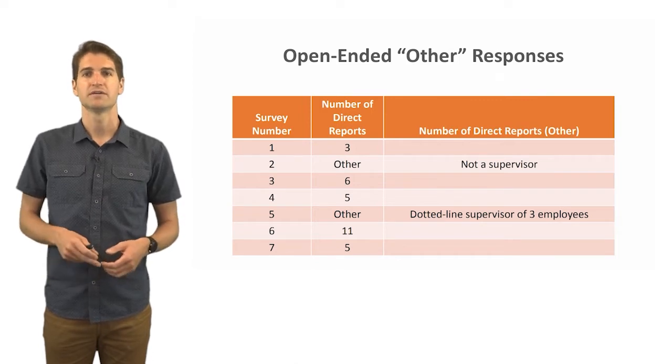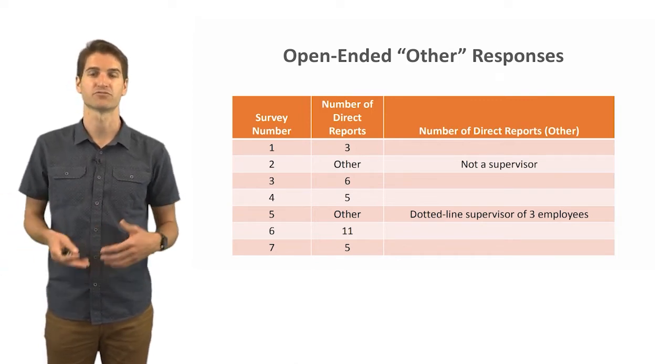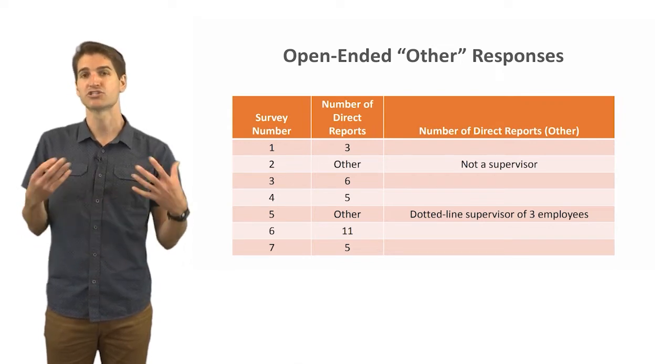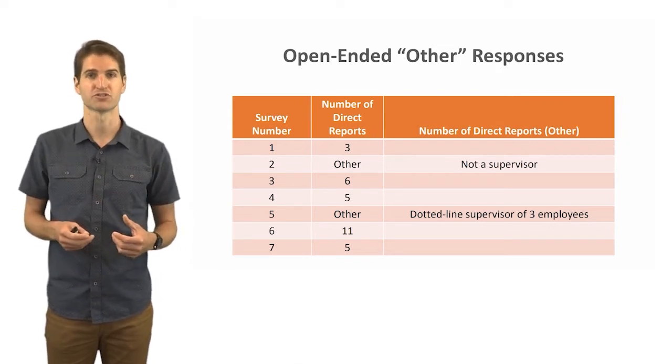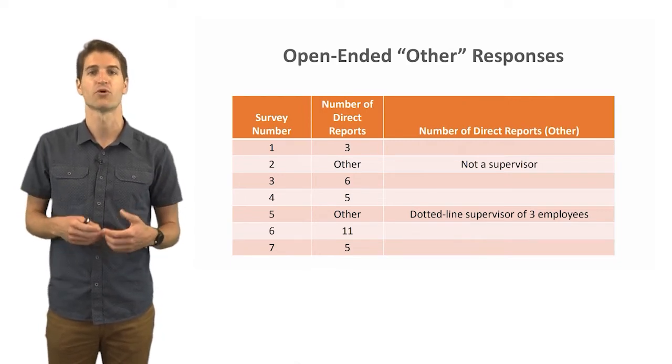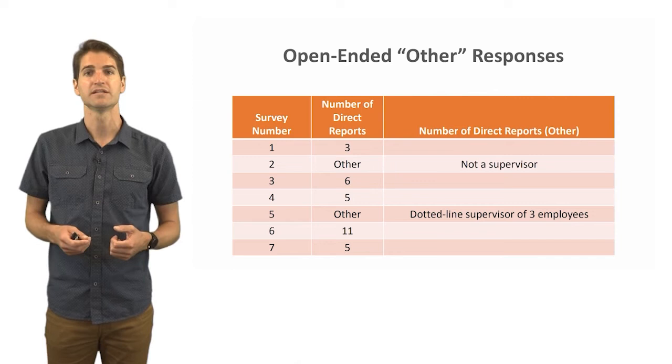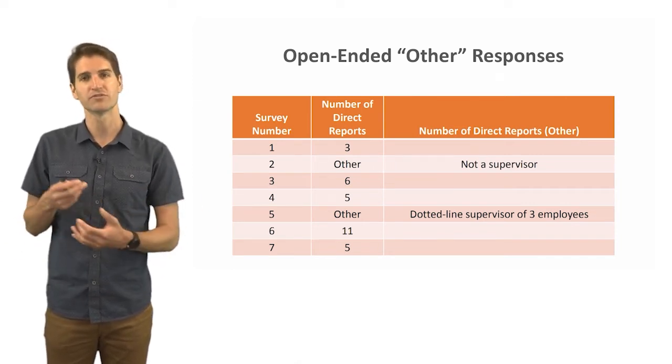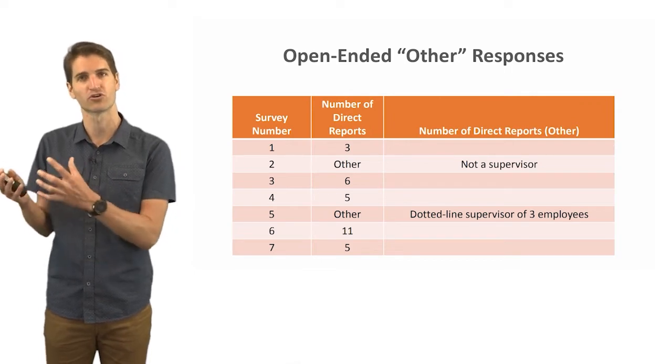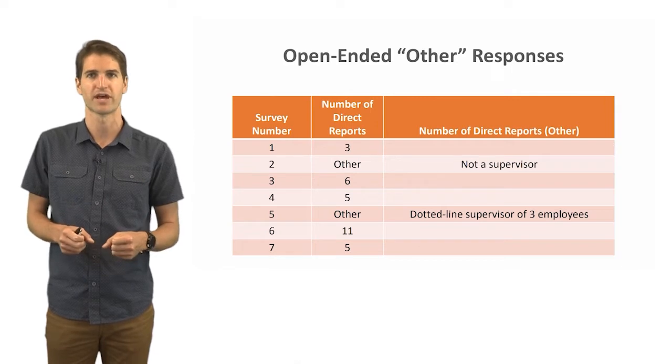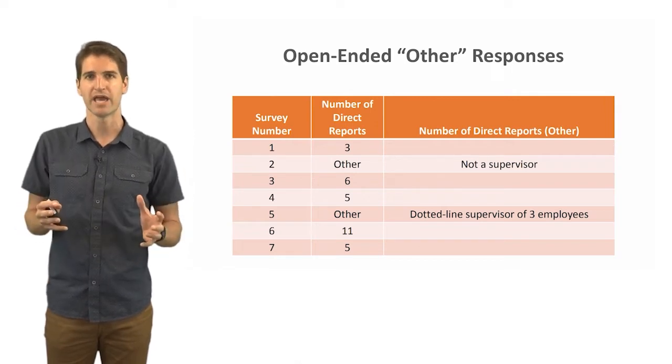The second other response, this person wrote in 'dotted line supervisor of three employees.' This gets a little bit tricky because this isn't a solid line relationship, so to speak. The others are implying that these are their actual direct reports or the numbers of direct reports. This person is saying that they're a dotted line supervisor of three employees. How are you going to treat this? This is where you need to focus on what are your goals for the subsequent data analysis that's going to come from this survey, what is your sample and what are the parameters of that sample.